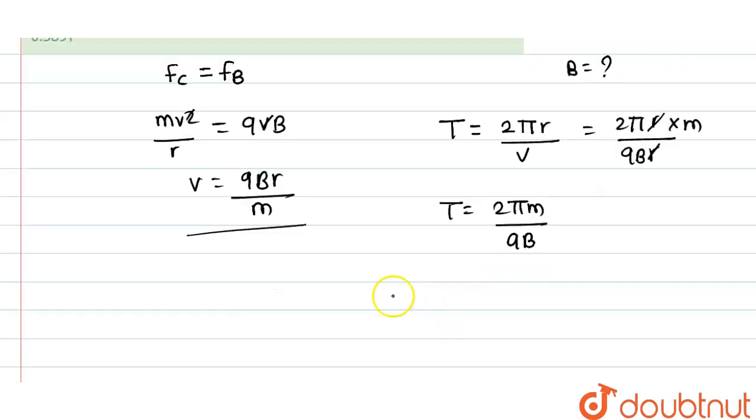And frequency will be exactly opposite of this time period, inverse of this time period, so it is qB/2πm.